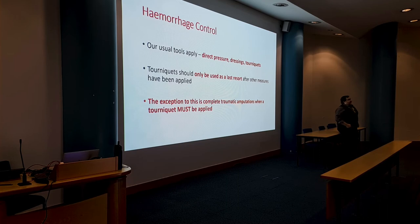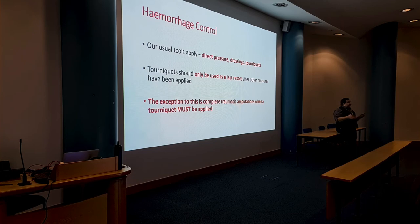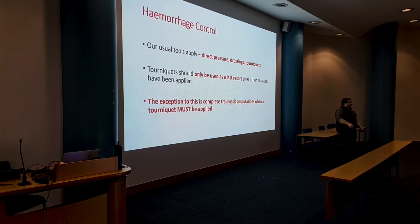Historically, tourniquets have been over-applied — patients have lost limbs or tissue as a result. You have four to six hours of peripheral limb tissue survival once a tourniquet is applied. Problems arise when they're left on too long, the time of application isn't documented, or they're applied for minor bleeds rather than exsanguinating haemorrhage. Reserve them for hosing arterial haemorrhage or traumatic amputations.